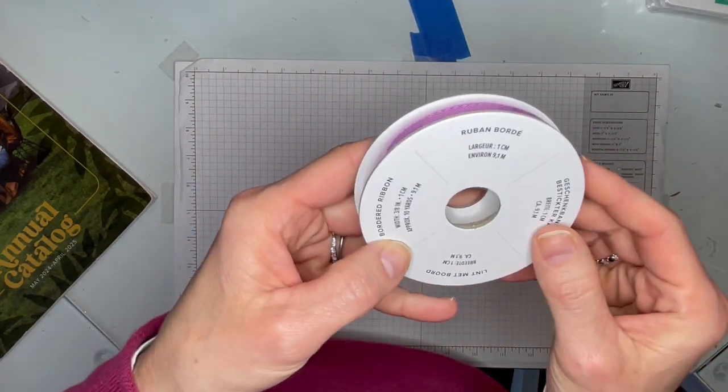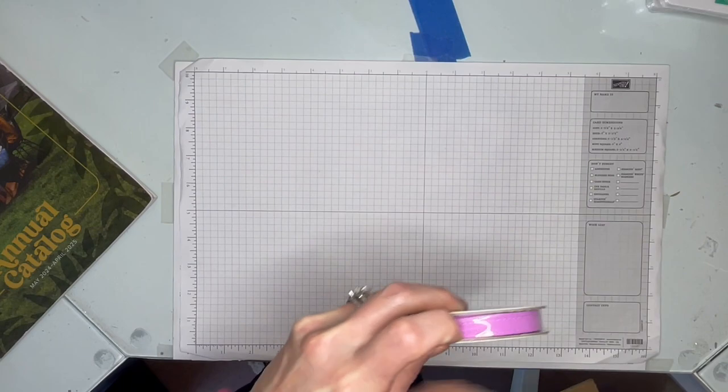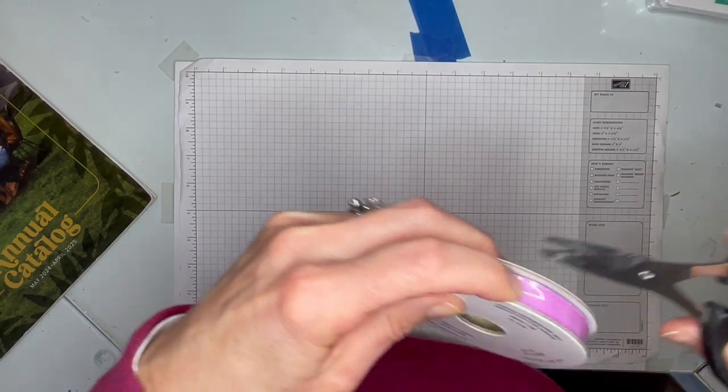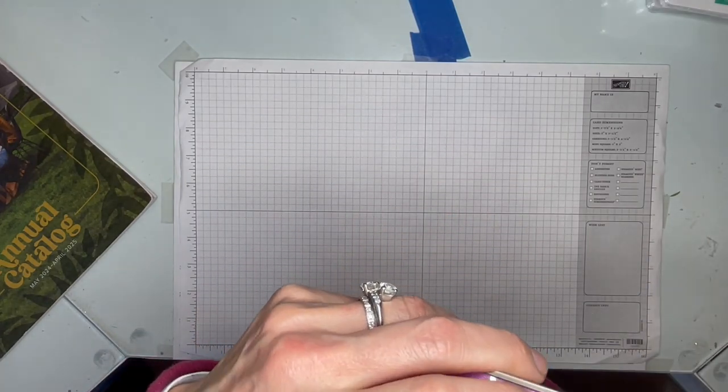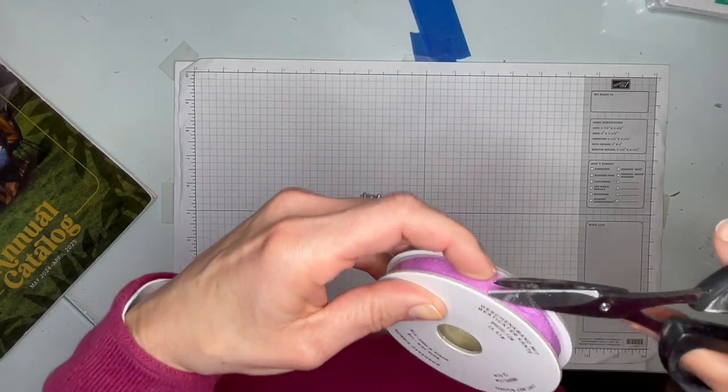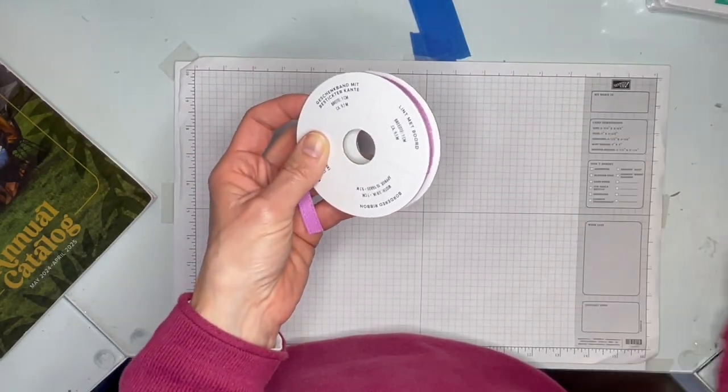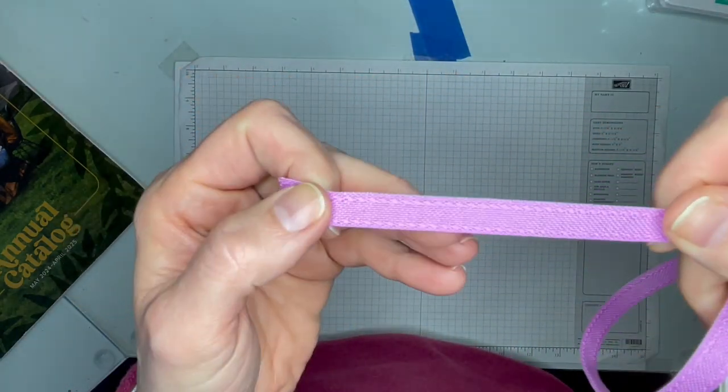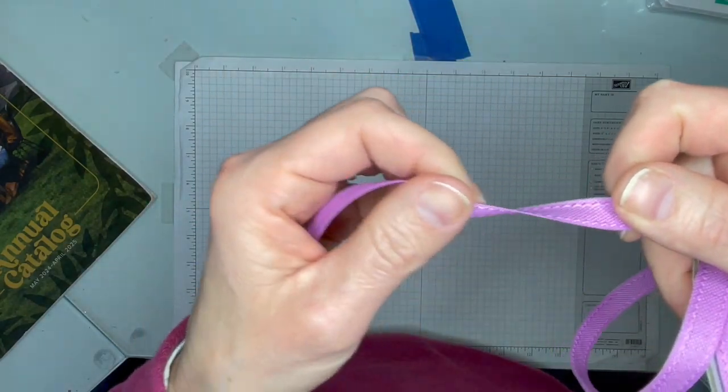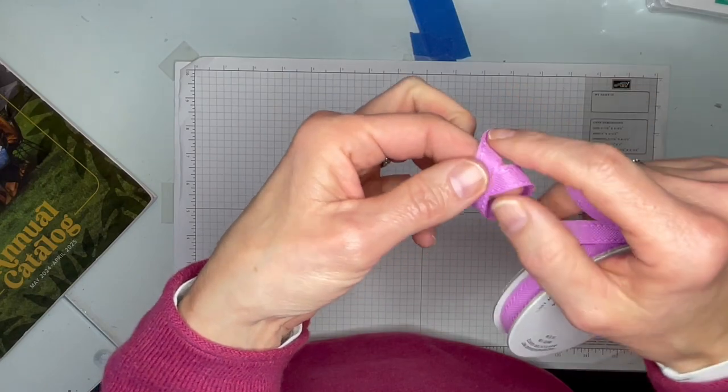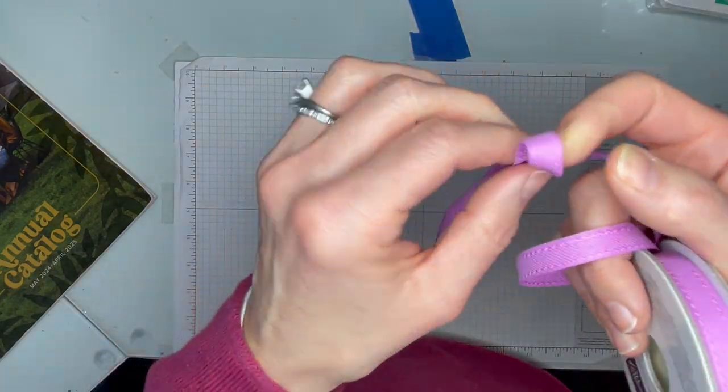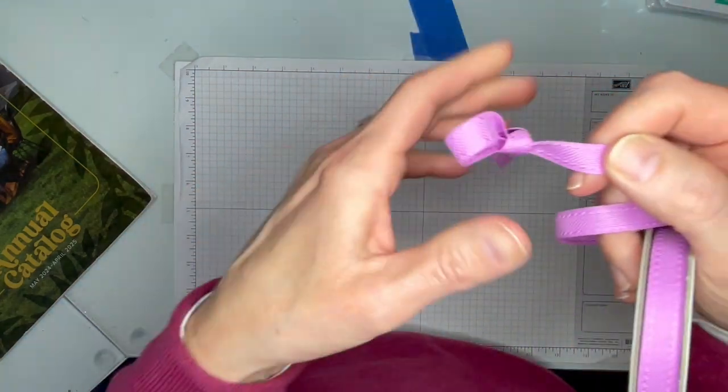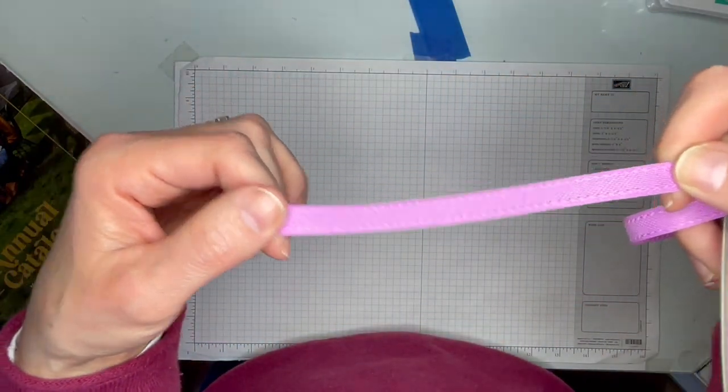This is the Petunia Pop bordered ribbon and I'm going to pop open the plastic so you guys get to see it in the texture. This is nice. It's not too thick. It should tie nicely for some nice bows. And of course, it's got the little bit of a stitching detail on the side. I guess that's the border. That is pretty. So that's in the Petunia Pop color.